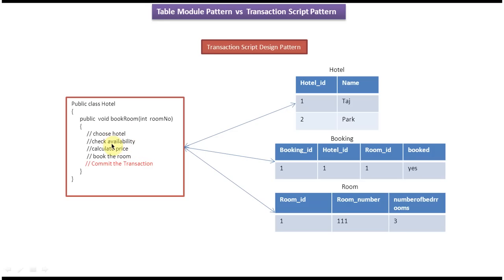What this method does is: choose the hotel, check the availability of the room, calculate the price if the room is available, the client pays the money, and once payment is made it books the room, marks it as booked, and commits the transaction. So this single class and single method is responsible for communicating to three different database tables.